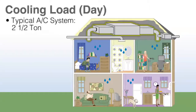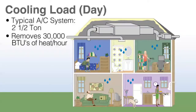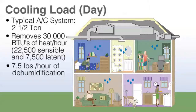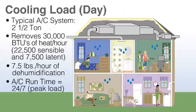A two and a half ton AC would typically be recommended for a high-quality home of this size. Properly set up and sized, this would remove 30,000 BTUs of heat per hour — 22,500 BTUs would be sensible heat and 7,500 BTUs would be latent, which is moisture removal. This amounts to 7.5 pounds of dehumidification per hour. If the AC is running total time, this matches the amount of water that the AC would remove. Ideally, an AC is capable of maintaining 75 degrees and 50% relative humidity during peak load conditions.